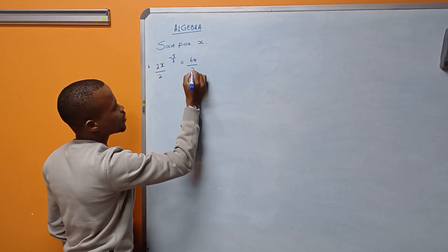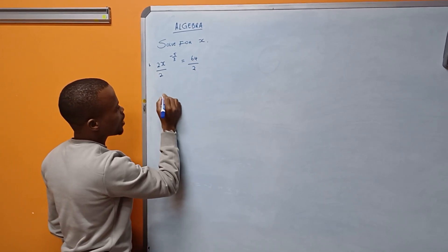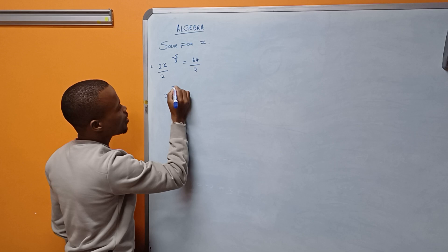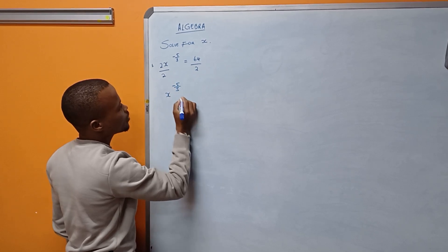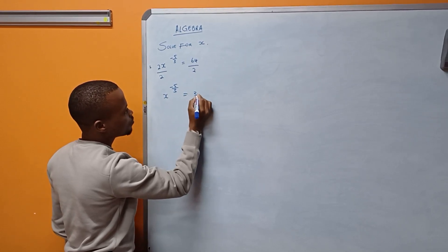Dividing both sides, I end up with x to the power of minus 5 over 3 being equal to 32.